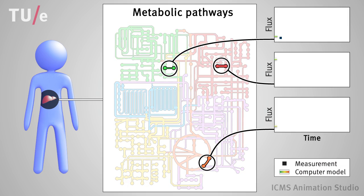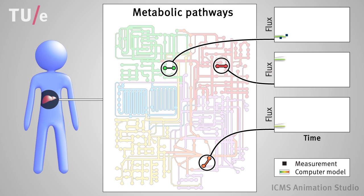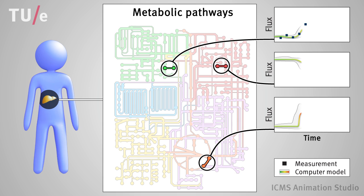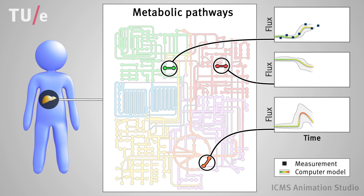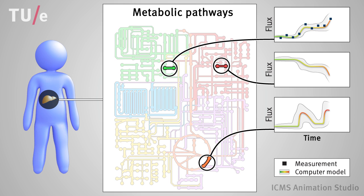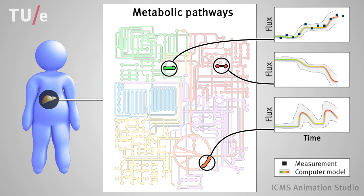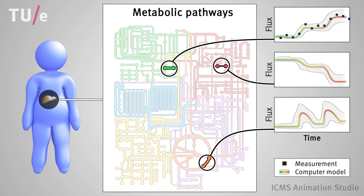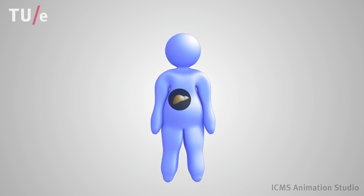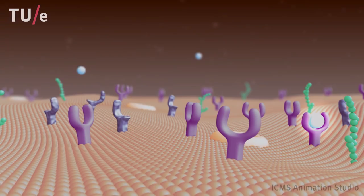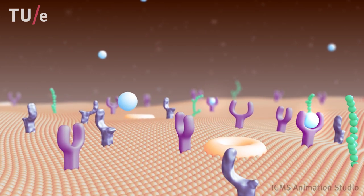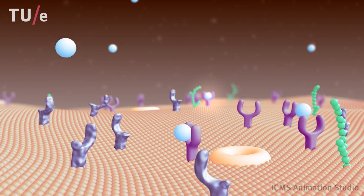Computational models can help in understanding these complex networks. Experimental data is used to make predictions about processes that cannot be measured. At the Eindhoven University of Technology, a computational method has been developed to simulate the progression of metabolic diseases. This method, called ADAPT, integrates experimental data from longitudinal studies with computer simulations. ADAPT identifies the processes that are disturbed and collectively induce the disease. In this way, we can propose molecular mechanisms involved in the disease.